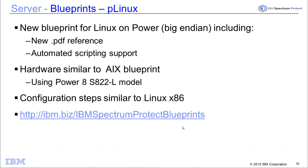We have a new blueprint for PLinux. Blueprints are a great set of documents that give advice on the type of hardware and how to set up a Spectrum Protect server, and also provide scripts to automate that procedure. The new blueprint is for Linux on Power for Big Endian, and includes a new PDF reference as well as new scripting. The hardware utilized is similar to our AIX blueprint — the Power8 S822-L model — and the configuration steps will look similar to our Linux x86 blueprint.